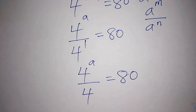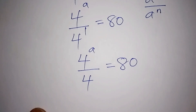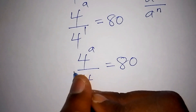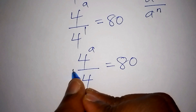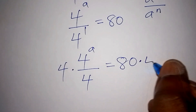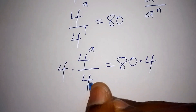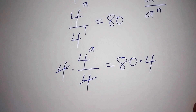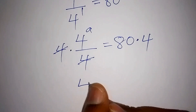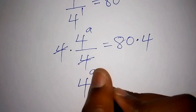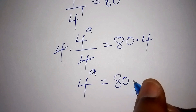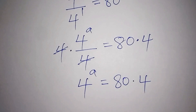So now we have 80. We want to remove this 4 in the denominator, so we shall multiply both sides by 4. The 4s on the left side cancel, and we remain with 4 to the power of a equals 80 multiplied by 4.